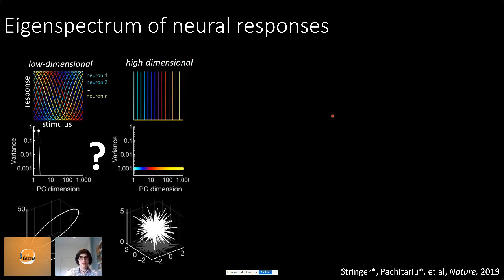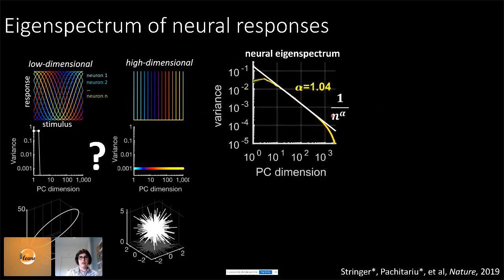What we found was that the neural eigenspectrum was neither of these extremes — it doesn't look like a few values then zero, nor like a flat line. Instead, the eigenspectrum decayed like a power law of one over n to the alpha, where alpha is approximately one. So this is a high-dimensional code — we can't fit this code into a box.